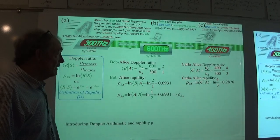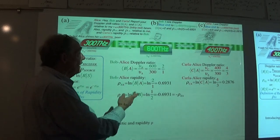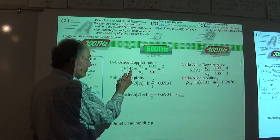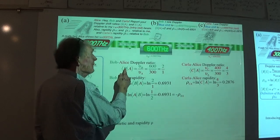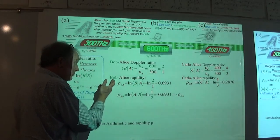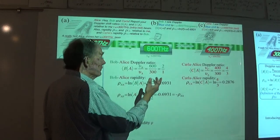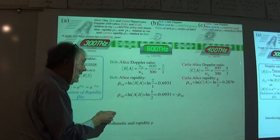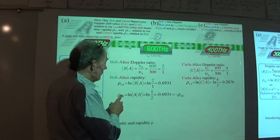So here I am doing 600 over 300 for Alice as the source and Bob as the receiver. It's a 2 to 1 ratio. And then the rapidity is a logarithm of that. So that comes out to be a decimal. The fraction that started with it was not. It wasn't rational.